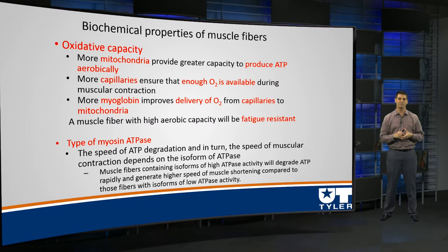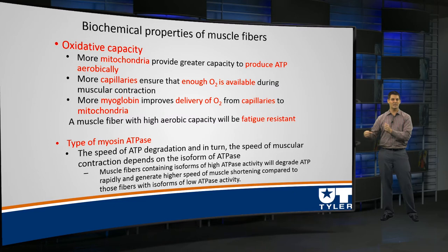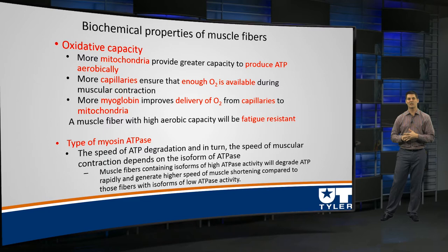A muscle fiber with a high aerobic capacity — something with high oxidative capacity — is going to be fatigue resistant. Of course, these biochemical properties make up type 1 muscle fibers. Type 2A has much less of that, and type 2B or X relies much less on them. When we talk about fatigue resistance as a continuum: type 1 is fatigue resistant; 2A is slightly resistant but still fatigues; and 2X fibers are actually fast fatigable — the term you'll hear later in this presentation.